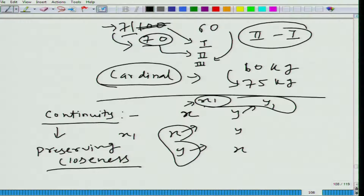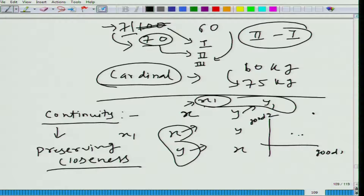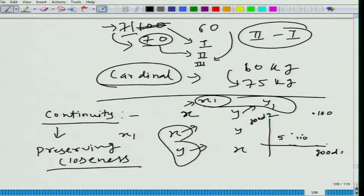Let me give you an example. Take a two-dimensional world with good one and good two. Take a bundle here assigned a number 5 and a bundle here assigned a number 100. Then a bundle close to the first one should have a number close to 5 — say 6 or 4. But if the nearby bundle is assigned 100 and the other 10, then definitely this preference is not continuous.